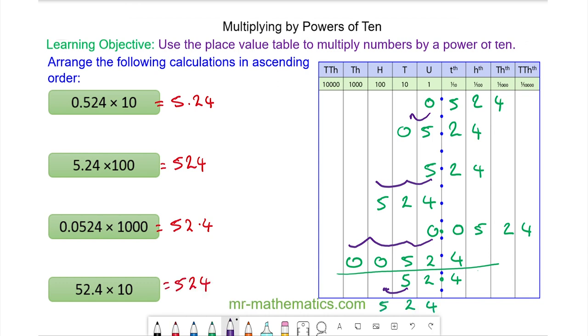So in ascending order, we have the lowest value, followed by 52.4, and the next two are equal.